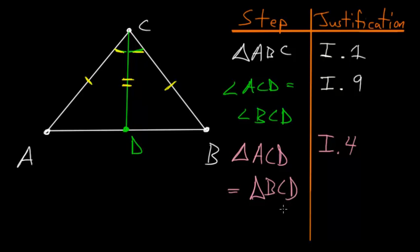And if two triangles are equal to each other, that means that all of their sides are equal to each other. So in conclusion, we know that AD and DB have to be equal to each other. So AD equals BD.